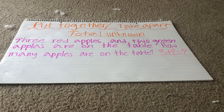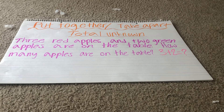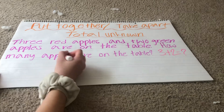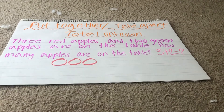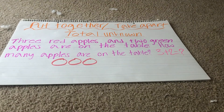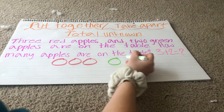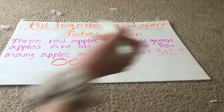I'm going to pick two different colors to show and draw pictures. First I need three red apples — one, two, three. And two green apples — one, two.